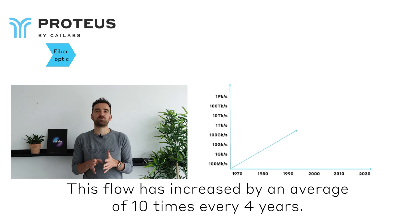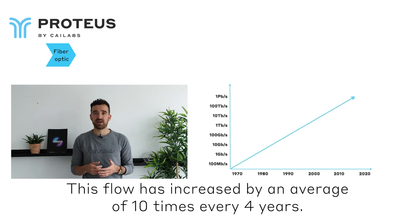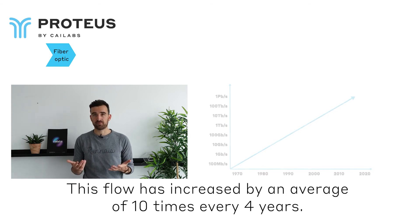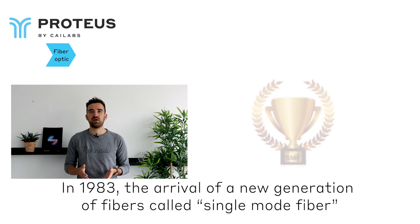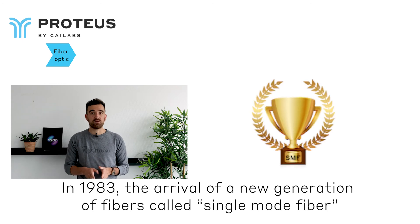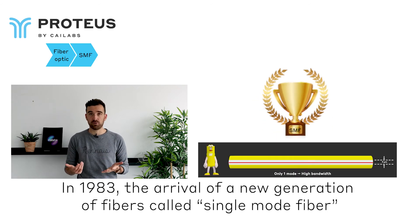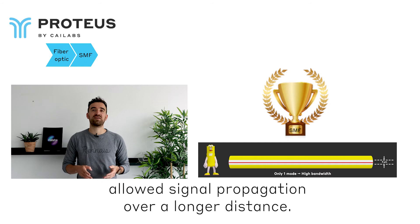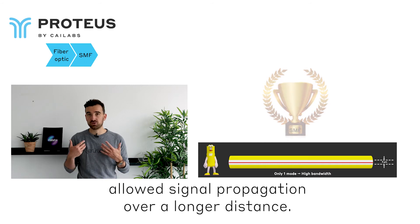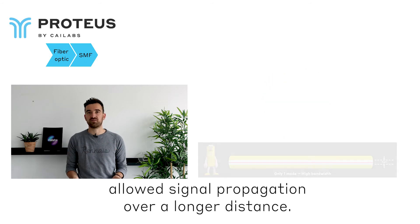The problem has been to find innovative ways and new equipment that can transmit more throughput in a single fiber. This flow has increased by an average of 10 times every 4 years. In 1983, the arrival of a new generation of fibers called single-mode fiber allowed signal propagation over a longer distance.